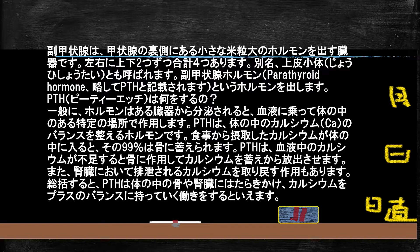このPTHというホルモンは体の中のカルシウム濃度を一定に保つ働きをします。カルシウムイオンが下がった場合に骨に働きかけて骨を溶かしカルシウムを取り出すか、腎臓からカルシウムが排泄されないよう働きかけて、カルシウム濃度を一定に保ちます。これが副甲状腺ホルモンの役割です。